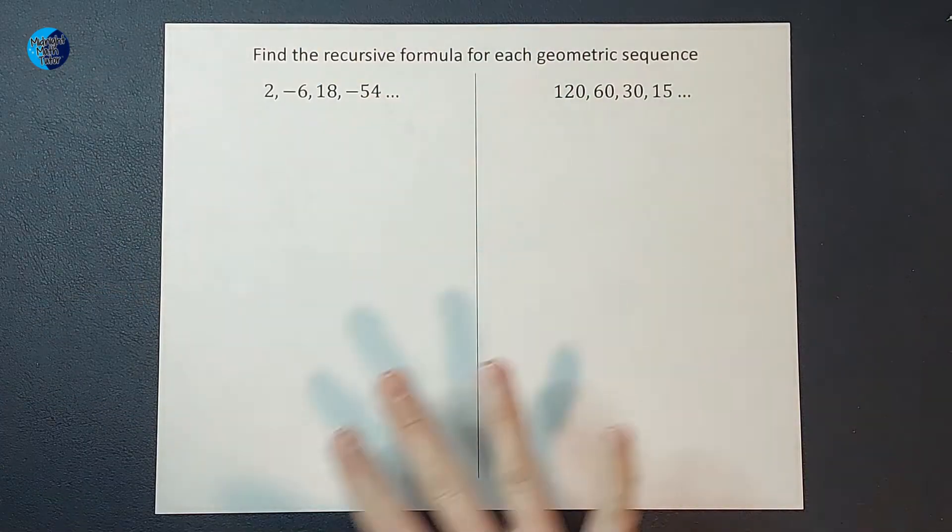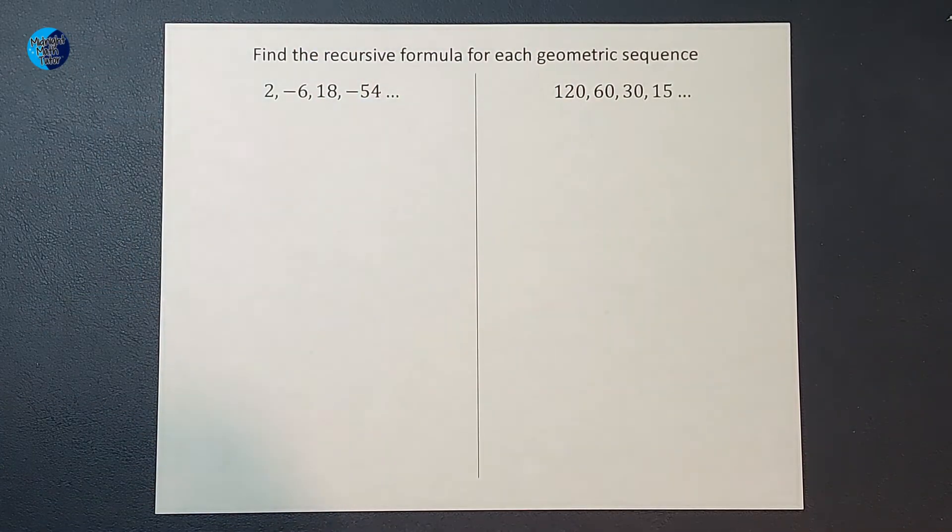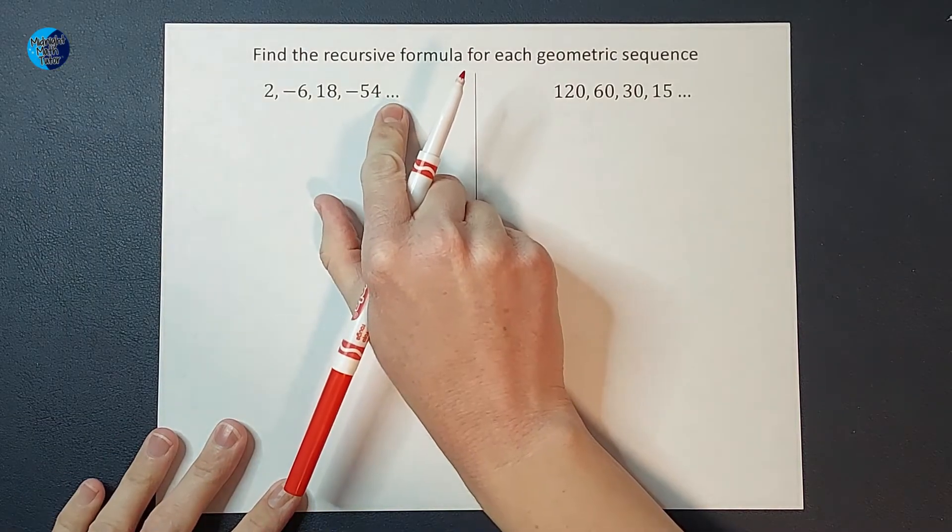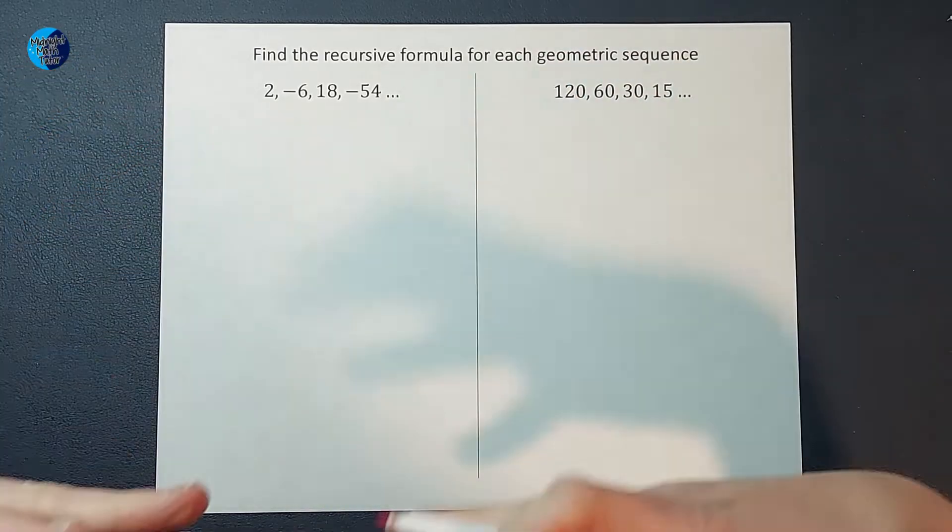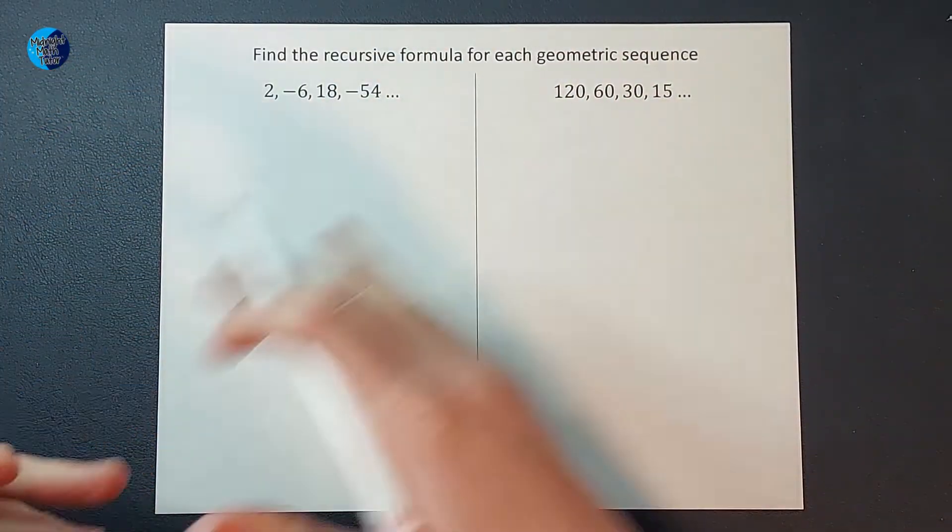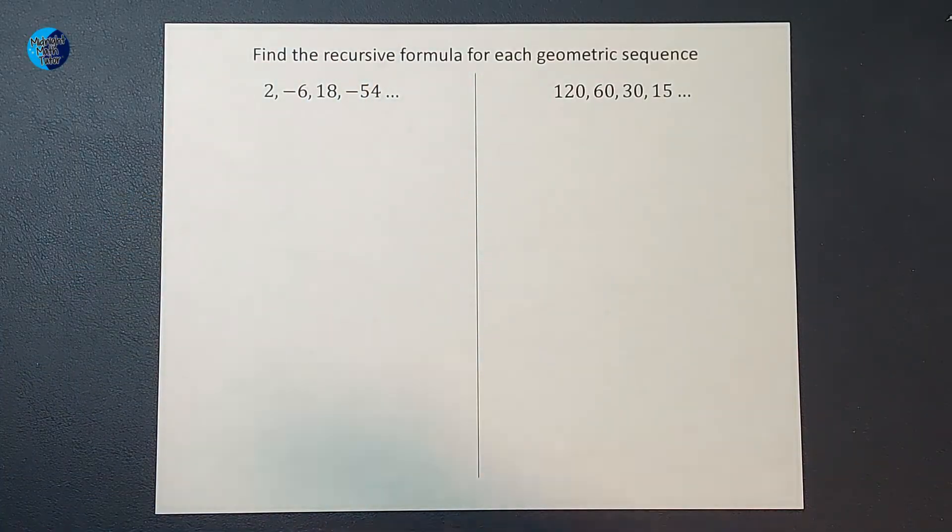Okay, we have some geometric sequences here and I want to figure out the recursive formula for them. The point of the recursive formula is to find more numbers in my sequence. This dot dot dot tells me that these sequences continue. They don't just stop with four numbers, they keep going. The recursive formula is going to help me or someone else find more numbers in this sequence.